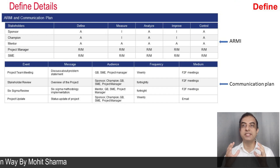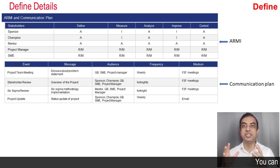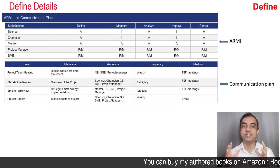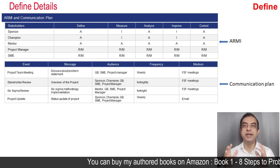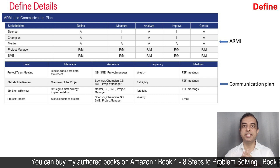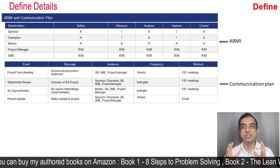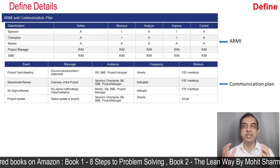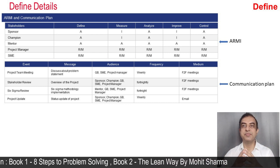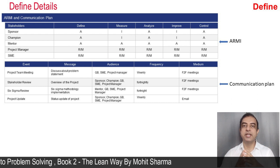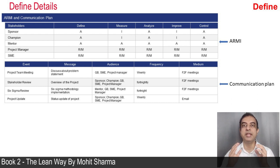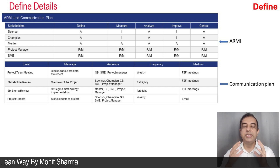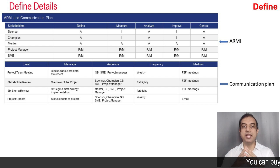In order to make every stakeholder understand their roles and responsibilities in each phase of this project, the team used an ARMY chart where A stands for Approver, R stands for Resource, M stands for Member, and I stands for Informed. Sponsor, champion, and mentor are generally the approvers in each phase. SMEs are the resources, and senior stakeholders are generally informed about project progress. Members help with data collection, brainstorming, and implementing ideas. The team also created a communication plan and followed it to complete the project in a defined time.